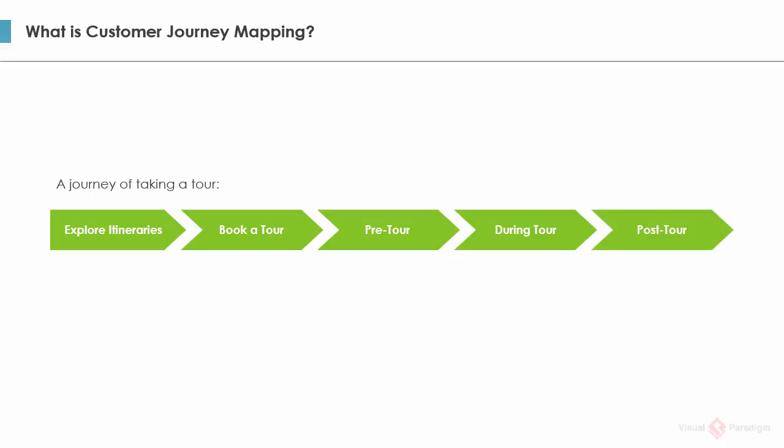Keep in mind that a customer journey map must be drawn from the customer's perspective. It describes the activity the customer would undertake and verbs the customers might use. So you see the stage 'explore itineraries' here, instead of something like 'provide tour details.' For each stage, identify the customer touch points. A touch point is any time a potential customer or customer comes in contact with your brand.